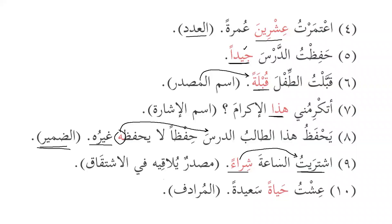Iishtu hayatan sa'idatan — I lived a happy life. Here hayatan is a synonym of iishatan, so the muradaf, the synonym, can also be used as naib al-masdar. To summarize, the eight deputies are: kulla/ba'da/ayya, adad, adjective, ismul masdar, ismul ishara, damir, masdarun yulaqihi fil ishtiqaq, and al-muradaf. We have now revised this for the third time, so hopefully it is clear.